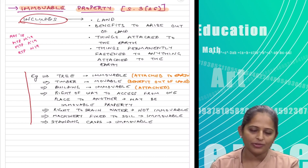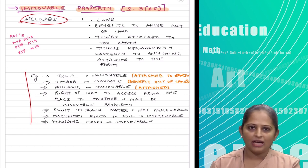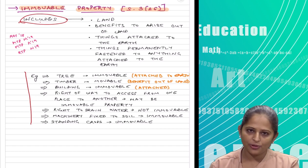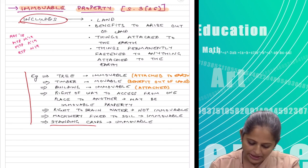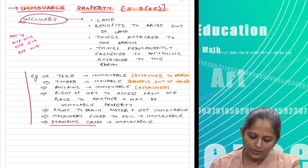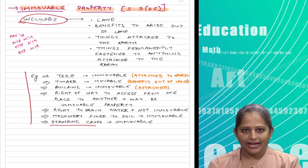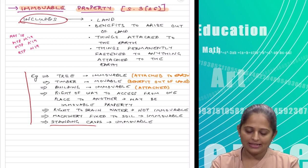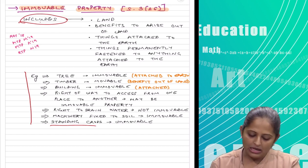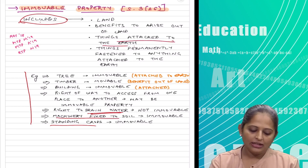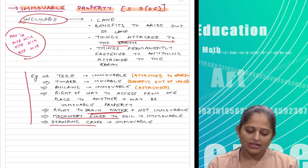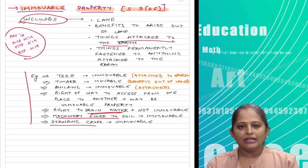Some examples: a tree is immovable property — you cannot move a tree from here to there. Timber, however, is movable property because it can be moved. Standing crops are immovable property. A building is immovable property. The right of way to access from one place to another may be considered immovable property, but the right to drain water is not. Machinery fixed to soil is immovable property because it is a thing attached to the earth. This has been asked in exams and covered in MTP and RTP.